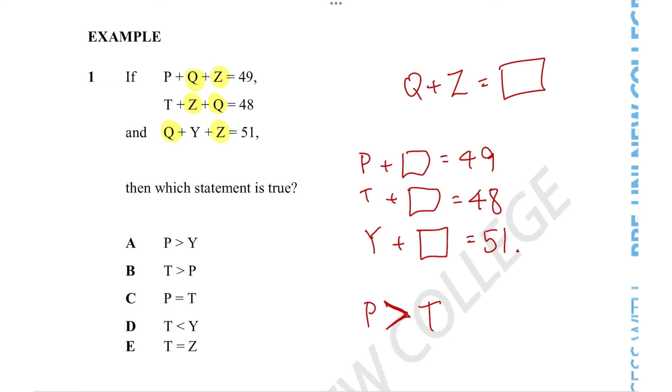Similarly, let's compare these two equations. Adding T with the square gives us 48, but adding Y with the square gives us 51. So clearly Y has to be much bigger than T, and in fact bigger than P, because P only gave us 49 but adding it with Y gave us 51. So clearly Y has to be the biggest letter here.